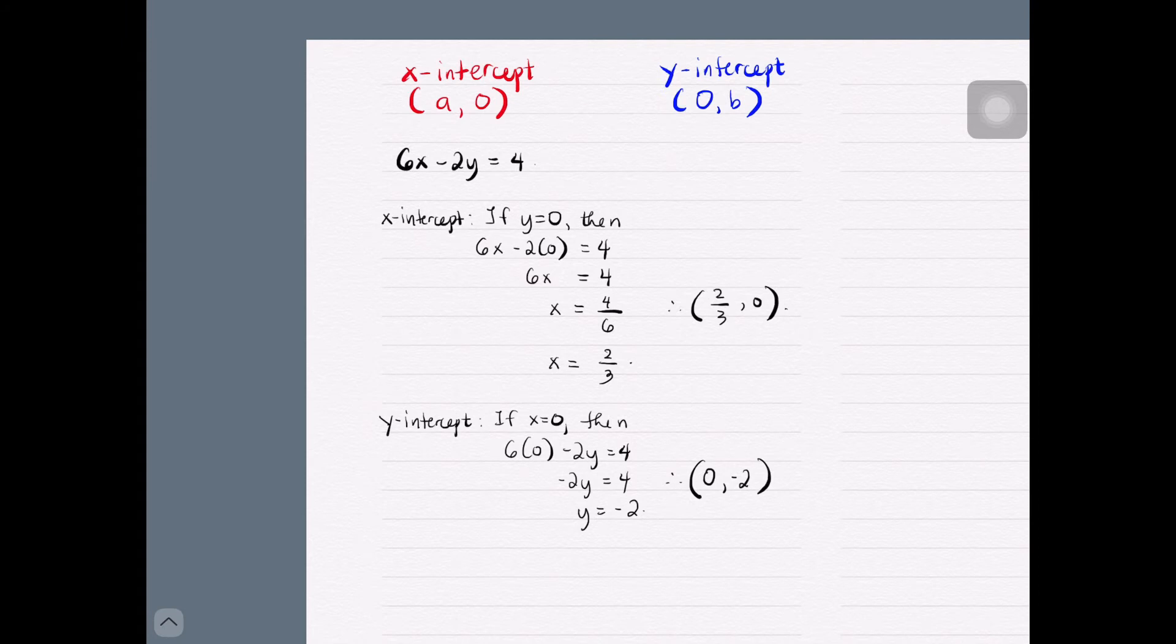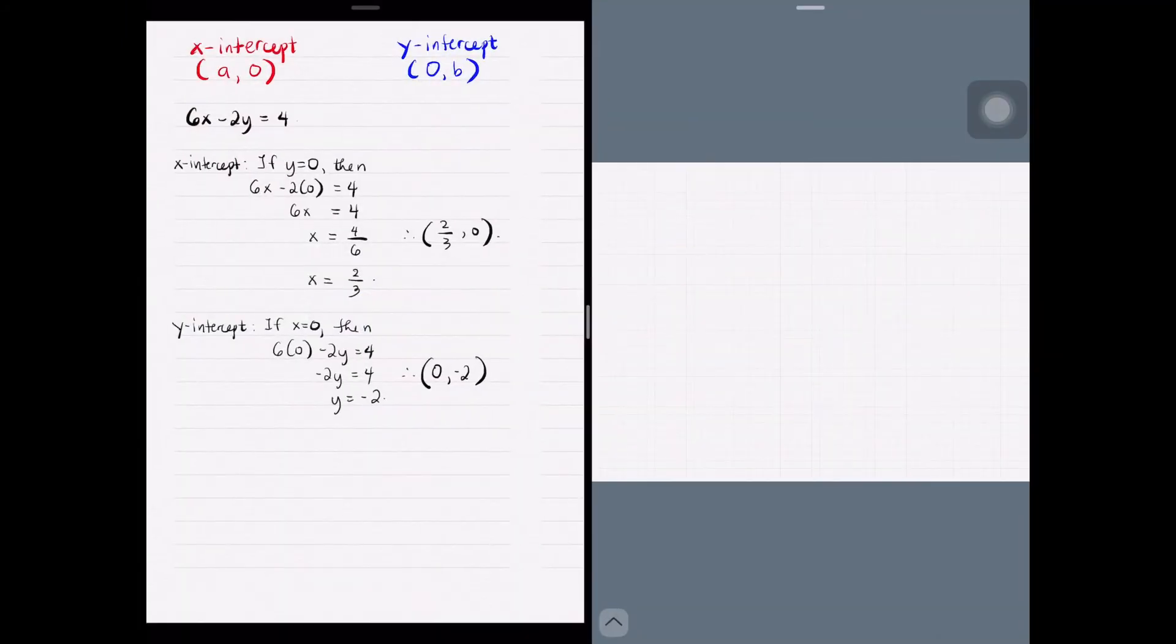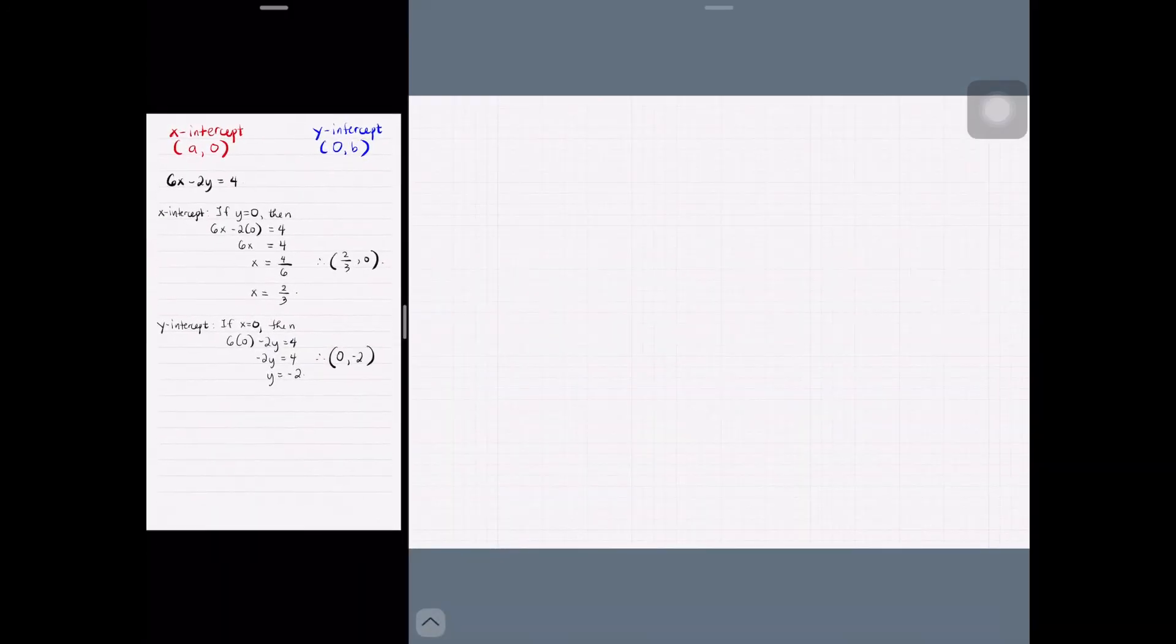Considering that at least 2 points would be needed to graph a line, we can definitely graph 6x - 2y = 4 with just an x-intercept and a y-intercept.